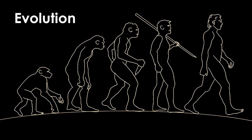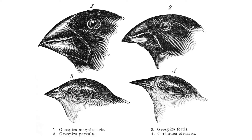New species originate on our planet through evolution. Evolution is arguably one of the most complex and nuanced topics in historical geology, and perhaps in science as a whole. But let's review some general ideas.